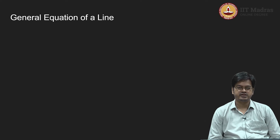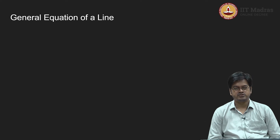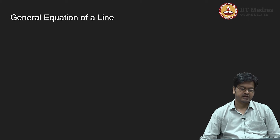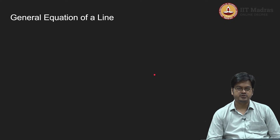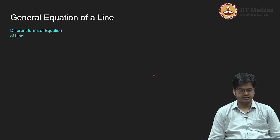So far in our journey we have studied how to represent a line, which is a geometric object, in algebraic manner using various forms of equations. This is a time to recollect what are the forms of equations that we have studied and understand some common properties in the equation of a line and give a general equation of line which will be helpful for further analysis. Let us see what are the different forms of line equations that we have studied.